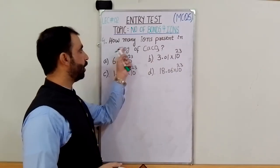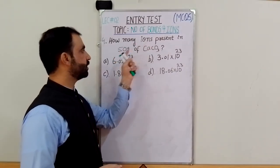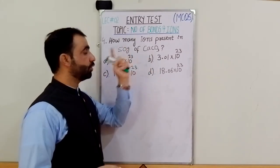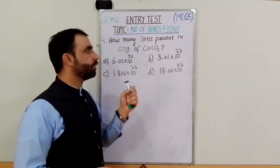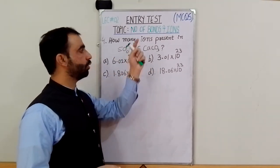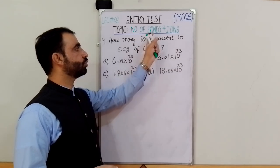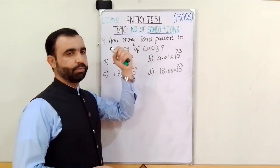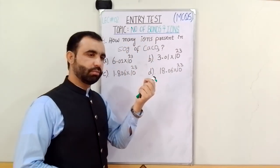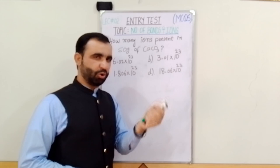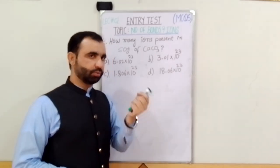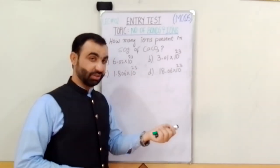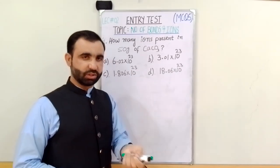MCQ 4: How many ions are present in 50 grams of calcium carbonate? In the first two MCQs we found the number of bonds in water, and in MCQ 3 we used an ionic compound.